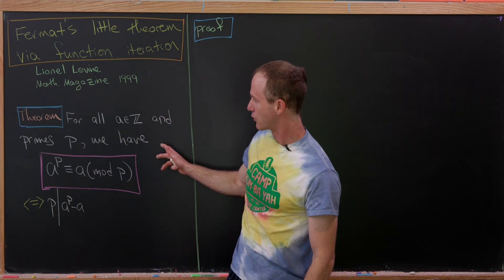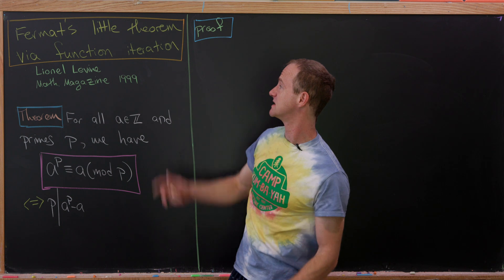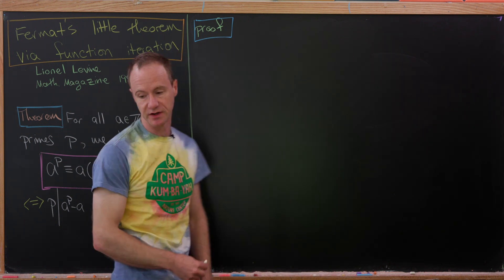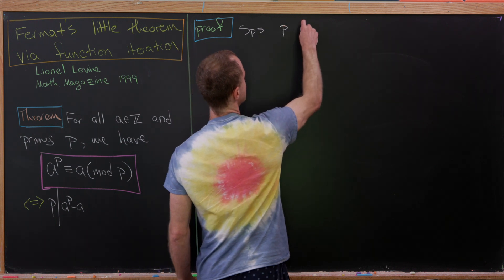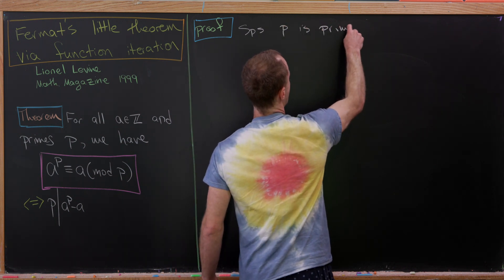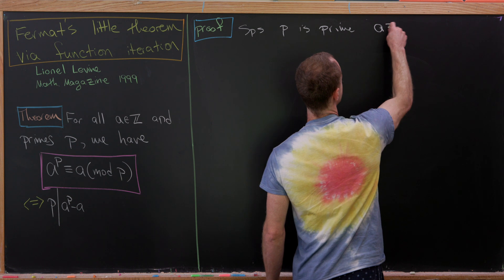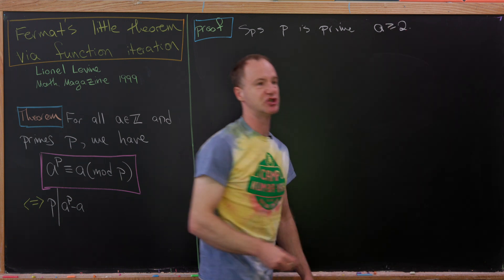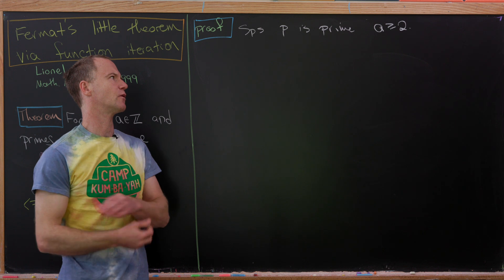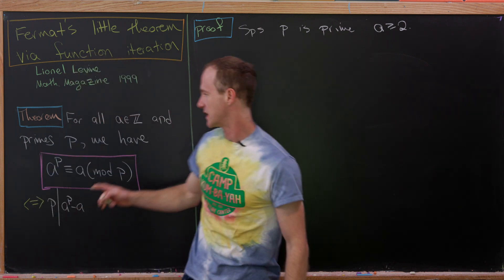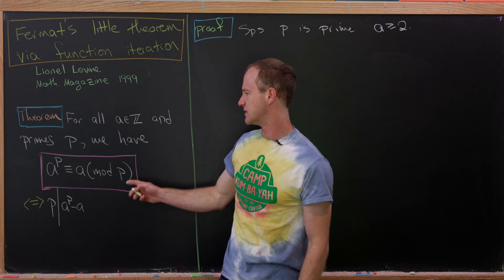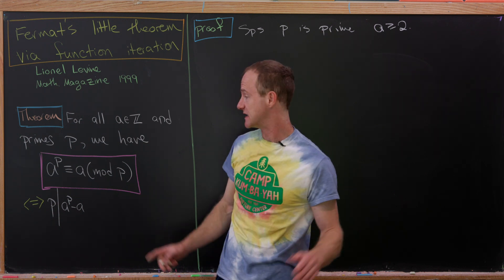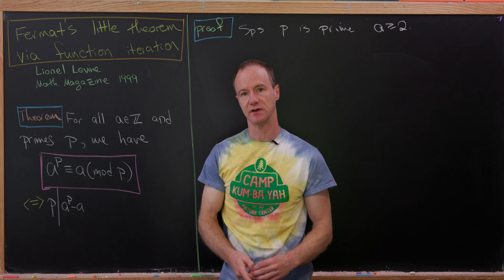Okay, so now we're ready for our proof of Fermat's Little Theorem based off of function iteration. So let's suppose that P is prime and that we have a number A, which is bigger than or equal to 2. So you might be a little bit worried about this because over here I say that A can be any integer. Well, notice if A is equal to 0, this is totally trivial. If A is equal to 1, this is totally trivial as well.